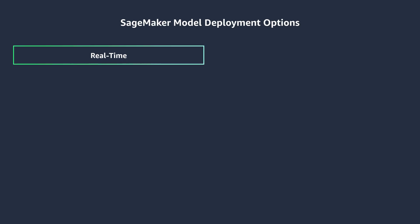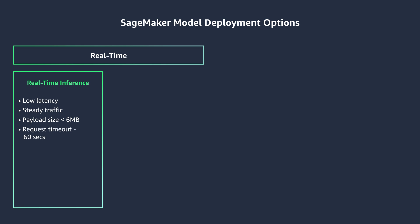Your first option is SageMaker real-time inference. This option is ideal for use cases that require low latency and high throughput. In this option, you get a persistent and fully managed endpoint that can handle sustained traffic. This endpoint runs on the instance type of your choice. Your application makes an inferencing request and gets an immediate response. Real-time inference can support payload sizes up to 6 MB and processing time of 60 seconds. Some use cases include ad serving, personalized recommendations, and fraud detection — all of which need a fast response.